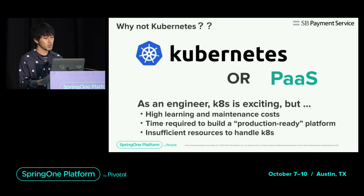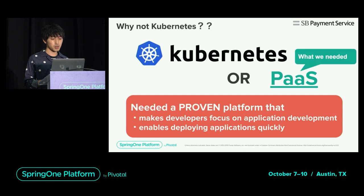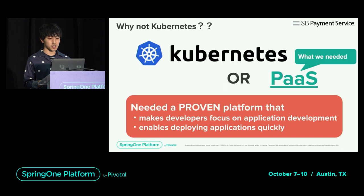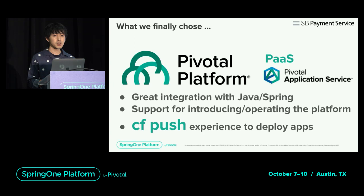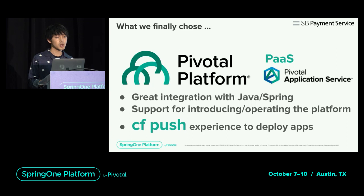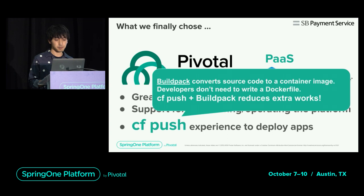Therefore, we decided to select a PaaS, which is a proven platform. This makes it possible for developers to focus on application development and deploy applications quickly. The final choice was the Pivotal Application Service. The reasons for selection were great integration with Java Spring applications, plenty of support for platform introduction and operation, and the CF push experience to deploy apps. The CF push command is a favorite feature for application developers.